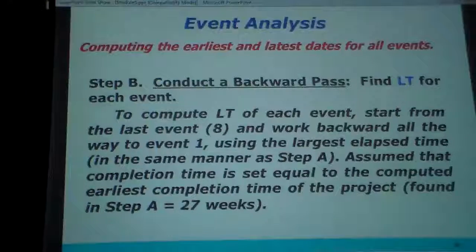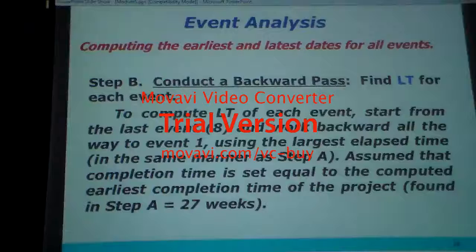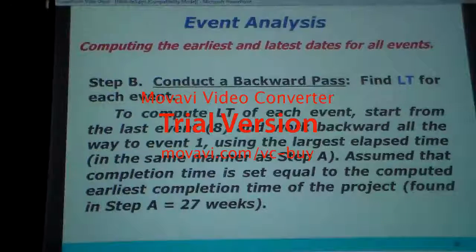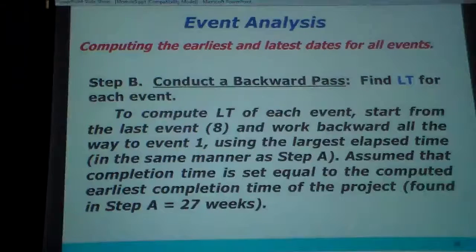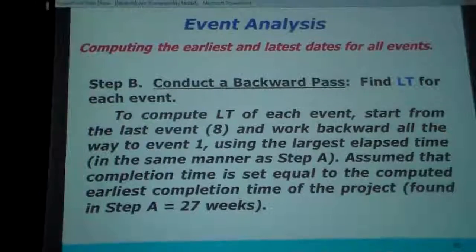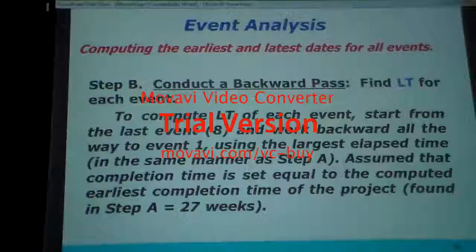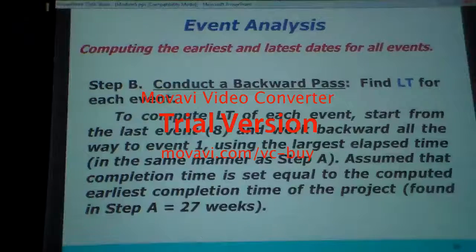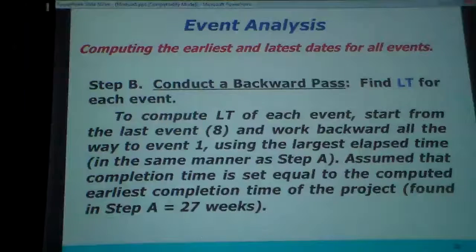Using the largest elapsed time in the same manner as step A. Assume that the completion time is set equal to the cumulative earliest completion time of the project found in step A — A is equal to 7. If you start from here it's difficult. The critical path, if you come here, 27. Because there are, in series, there is some... but we have to take, when we come, what is the total time for the project? So we have to take the largest for each.